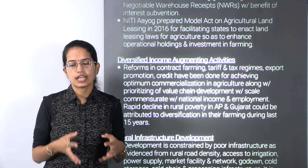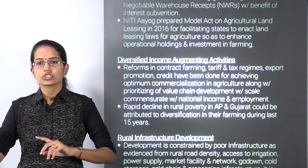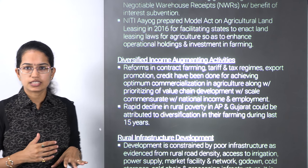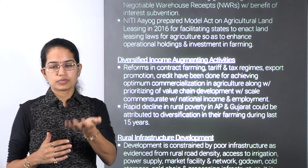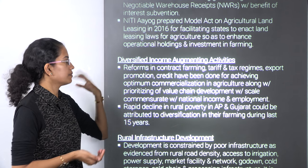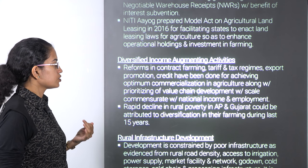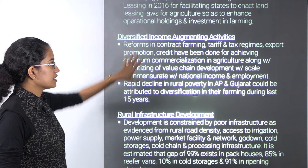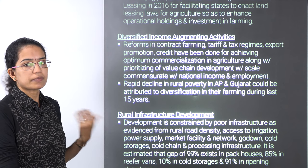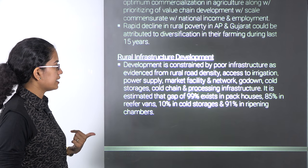Besides agriculture as the main subsistence, you can have the KUSUM project which talks about solar discoms and providing energy — the remaining energy could be sold off to discoms and the rest consumed on the farms. Bringing in agro-allied industries in the region is one method. This diversification has led to a decline in poverty mainly in the regions of Andhra Pradesh and Gujarat, which is a remarkable development.